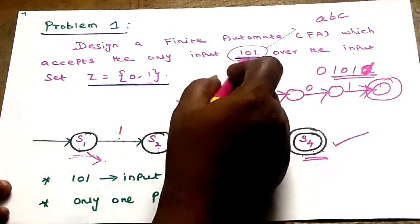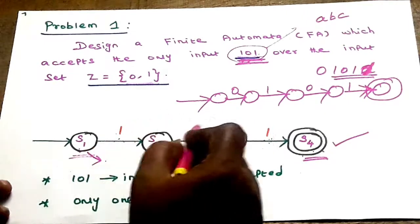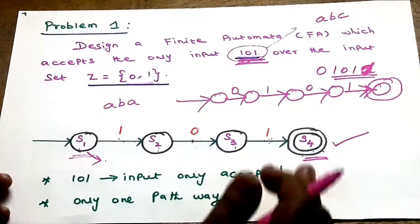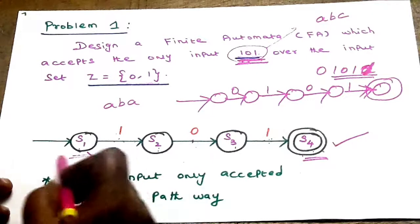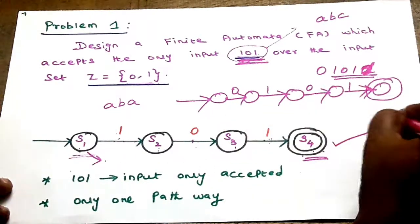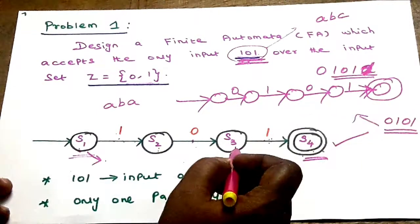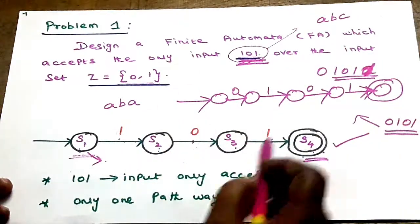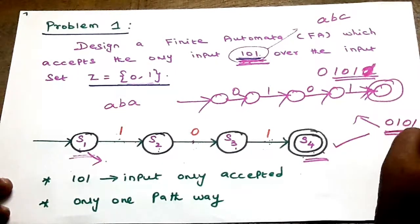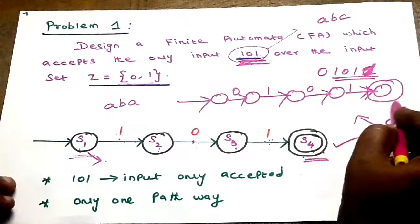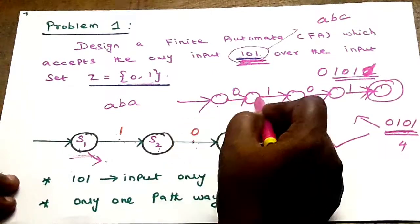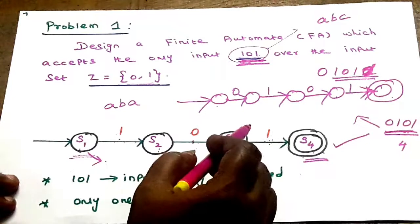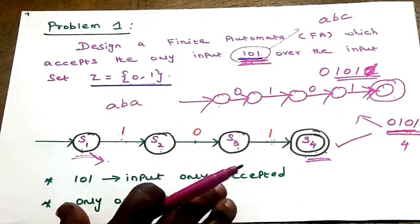The input set values are placed on the edges between states. For the input 101, there are 4 states. For input 0101, there are 5 states, with the 4th as the final state. These are the basic initial problems — from basic problems we move to advanced concept problems.